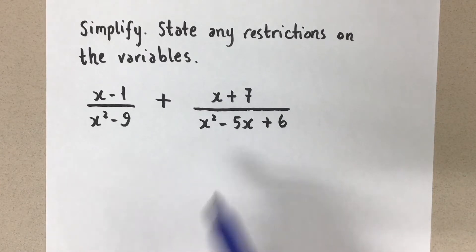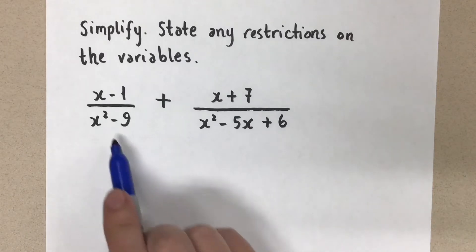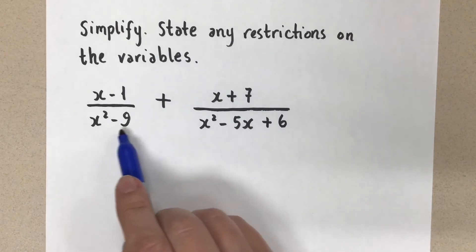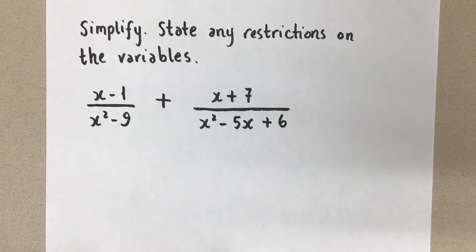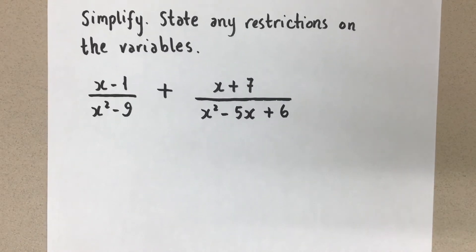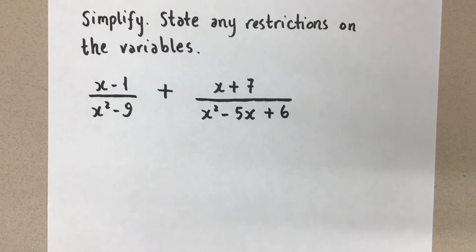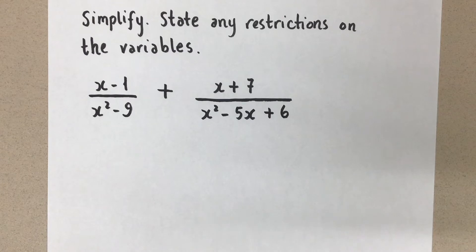So I'm going to show you how to do that. Before we do that, we want to factor the denominator here and the denominator here, because we always start off by factoring everything that we can factor, so that we can first get our restrictions on the variable, and then use the factors that we see to get a common denominator.